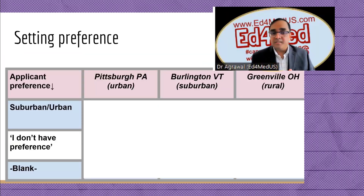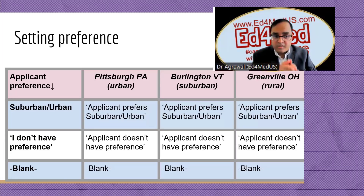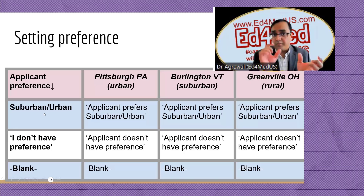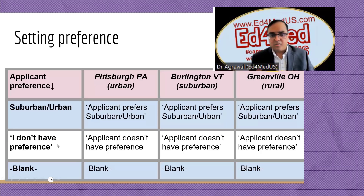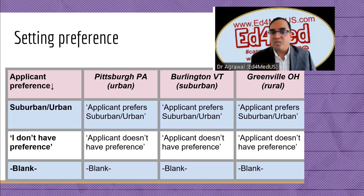Setting preference allows you to indicate suburban, urban, or rural preference. All programs will see this preference regardless of region. If you choose suburban and urban, don't apply to rural programs — they will see that mismatch and are unlikely to invite you. You can also choose 'I don't have any preference' and all programs will know that, or leave it blank to share no information.